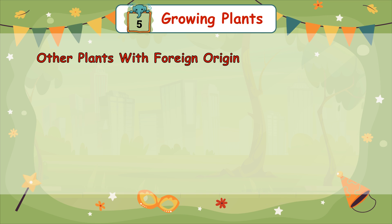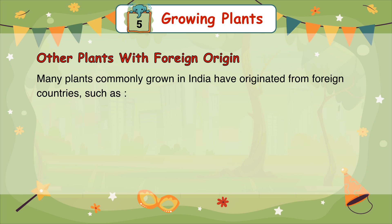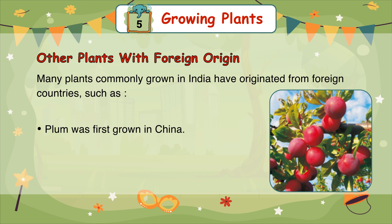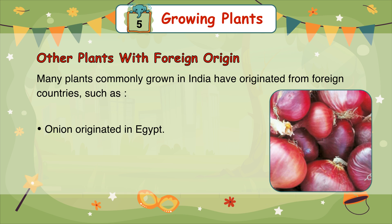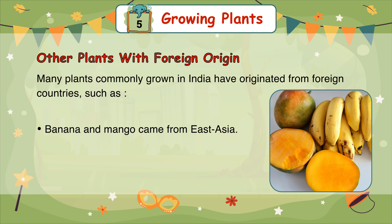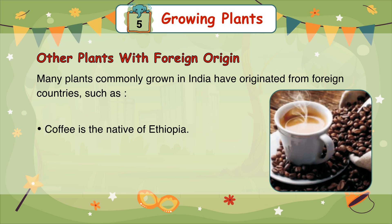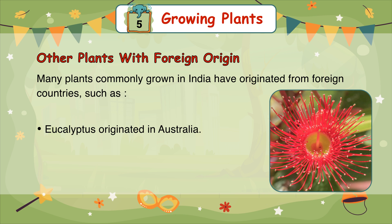Other plants with foreign origin: many plants commonly grown in India have originated from foreign countries. Plum was first grown in China. Watermelon originated in South Africa. Onion originated in Egypt. Banana and mango came from East Asia. Coffee is native to Ethiopia. Eucalyptus originated in Australia. Papaya and pineapple originated in America.